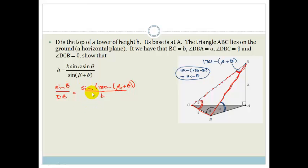So we can use our sine rule. So we can say sin theta over DB is equal to sin of 180 minus beta plus theta all over little b. So I can rearrange this now and I can say DB over sin of theta is equal to little b over sin of beta plus theta. So then I can take the sin theta across and I go DB is equal to b sin theta all over sin of beta plus theta.